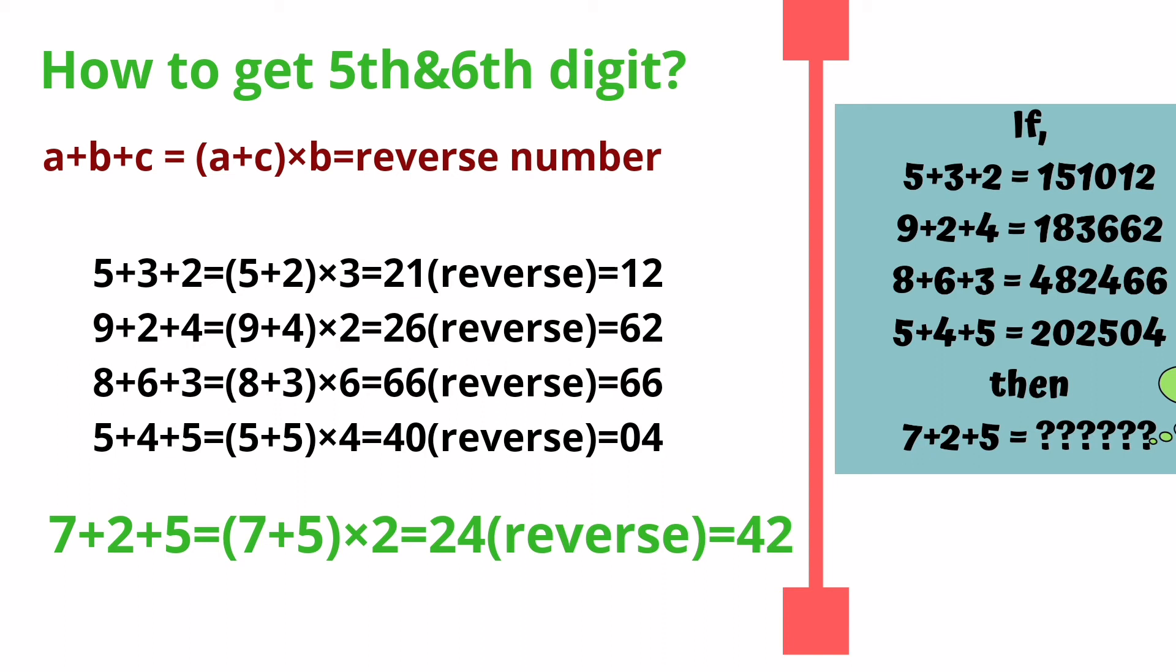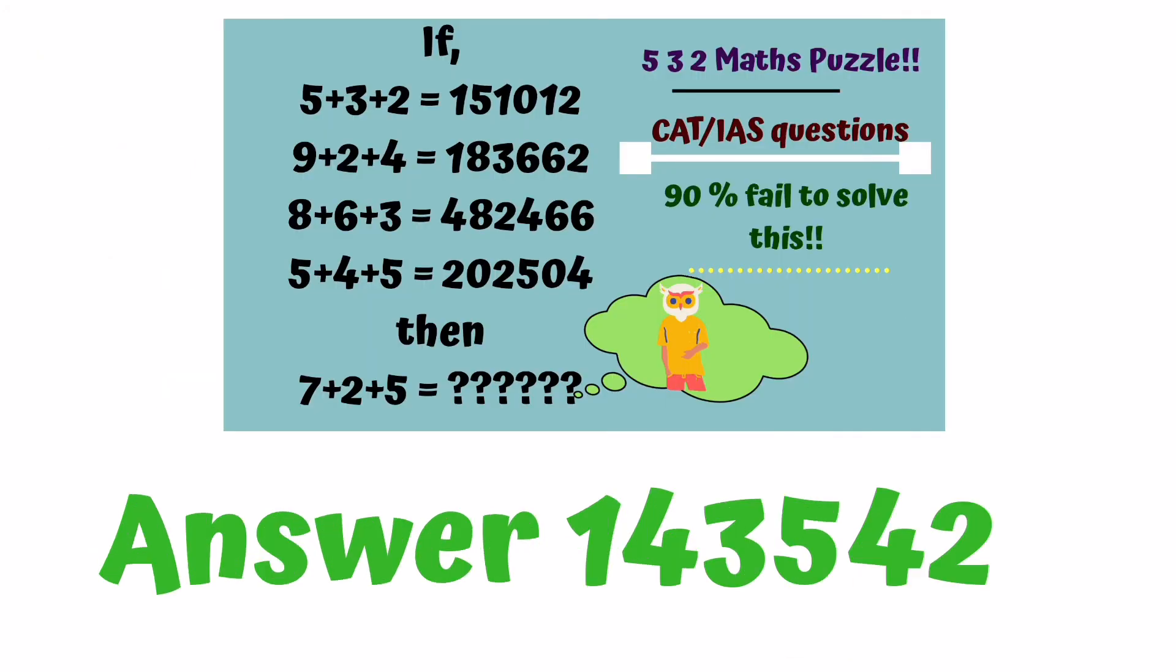For the final value of 7+2+5, we have 7+5 = 12, then multiply by 2 to get 24, and then reverse it to 42. So what will be your final answer?